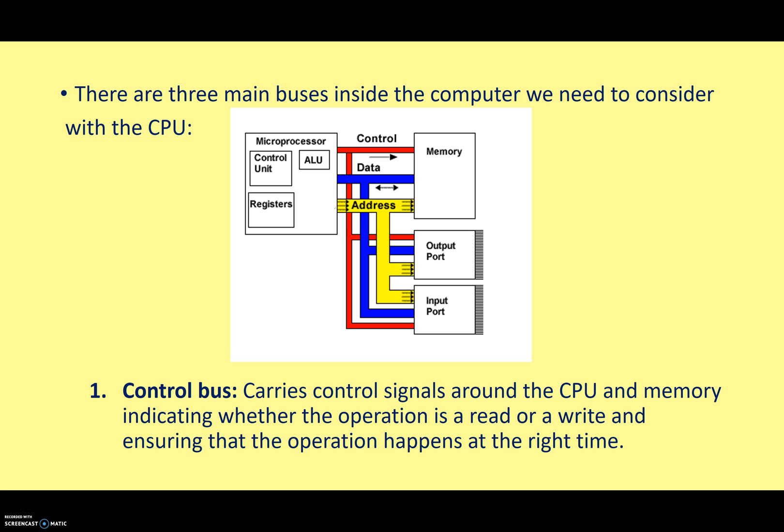In terms of the CPU, there are three buses that you need to know about: a control bus, a data bus, and an address bus. The first of these is the control bus. This carries the control signal around the CPU and memory, indicating whether the operation is a read or a write operation, and ensuring that the operation happens at the right time. And this is, of course, controlled by the control unit. It's one of its functions.